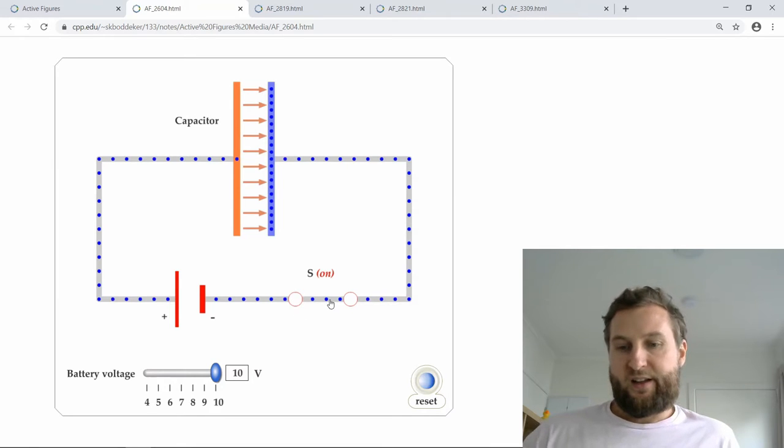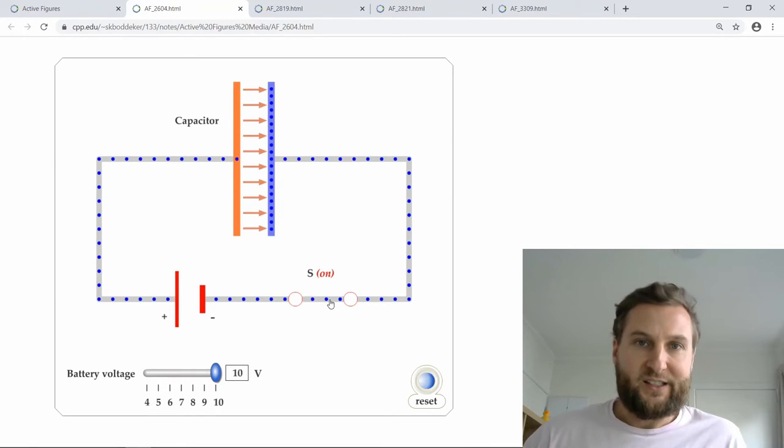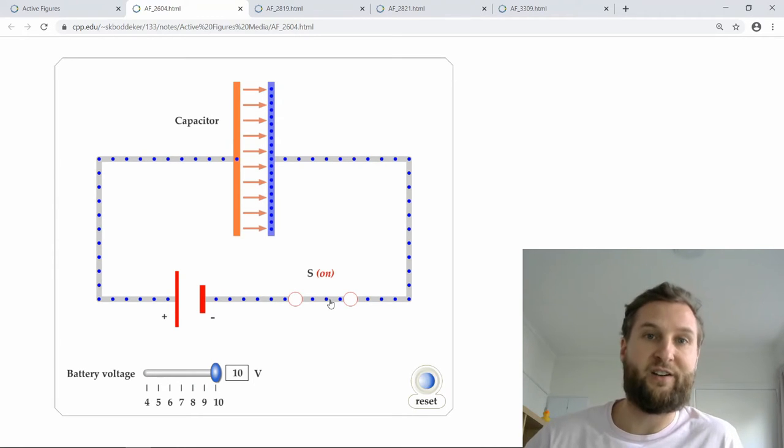The thing that might not be immediately clear is that electricity itself, which is electric charge, moves very very fast. It moves at a very high fraction of the speed of light. It's almost instantaneous.